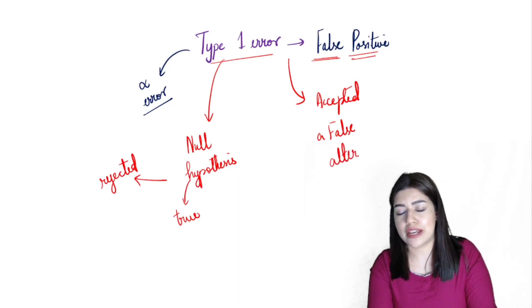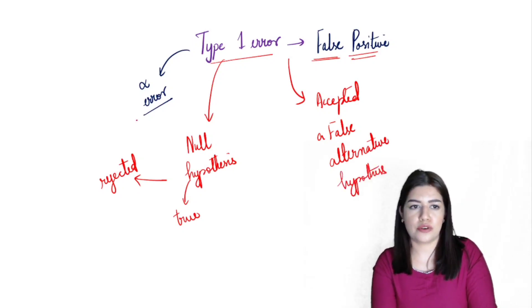So the null hypothesis, despite it being true, I have rejected it, and I have basically accepted a false alternative hypothesis. What would that look like in my example? Let's try to understand. Now let's say coffee.